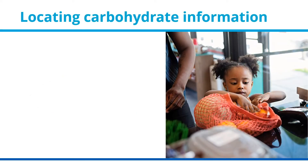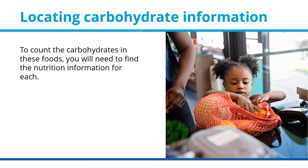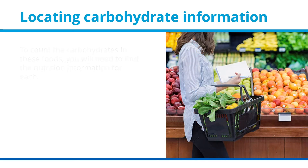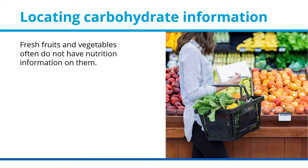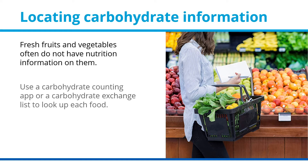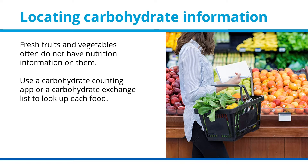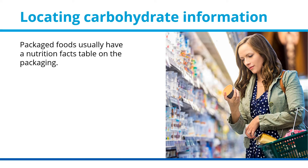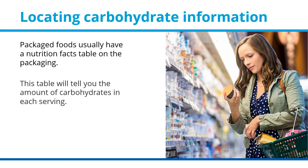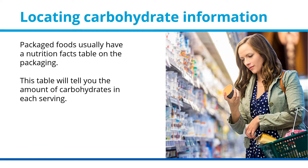Locating carbohydrate information. To count the carbohydrates in these foods, you will need to find the nutrition information for each. Fresh fruits and vegetables often do not have nutrition information on them — use a carbohydrate counting app or a carbohydrate exchange list to look up each food. Packaged foods usually have a nutrition facts table on the packaging, which will tell you the amount of carbohydrates in each serving.